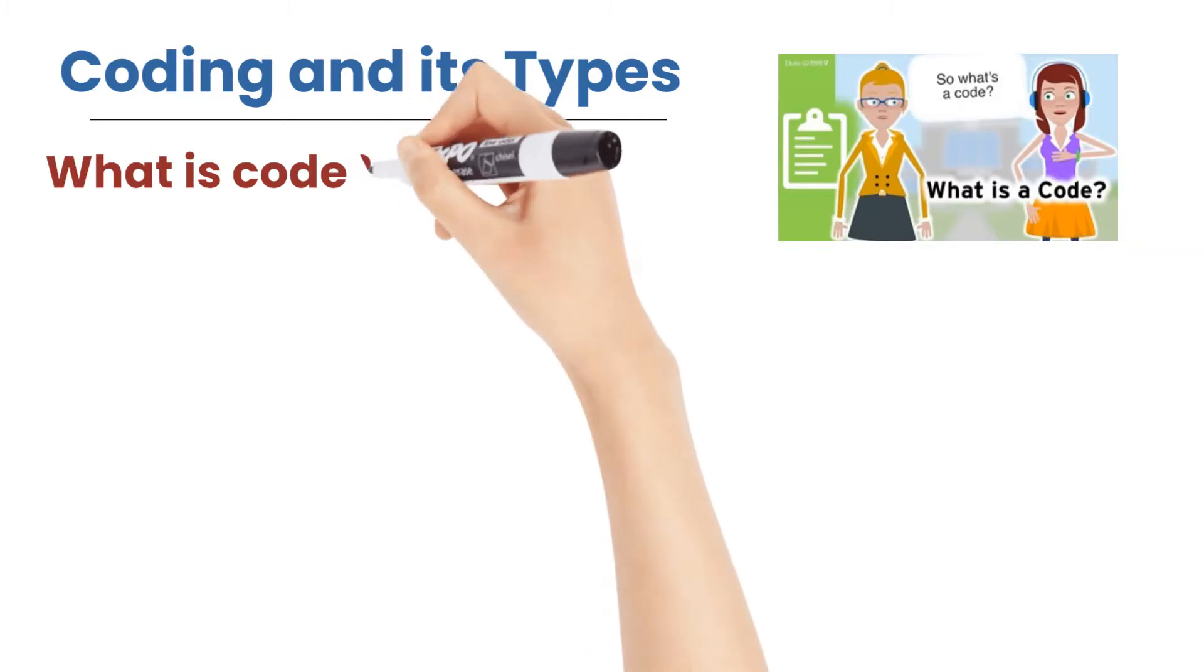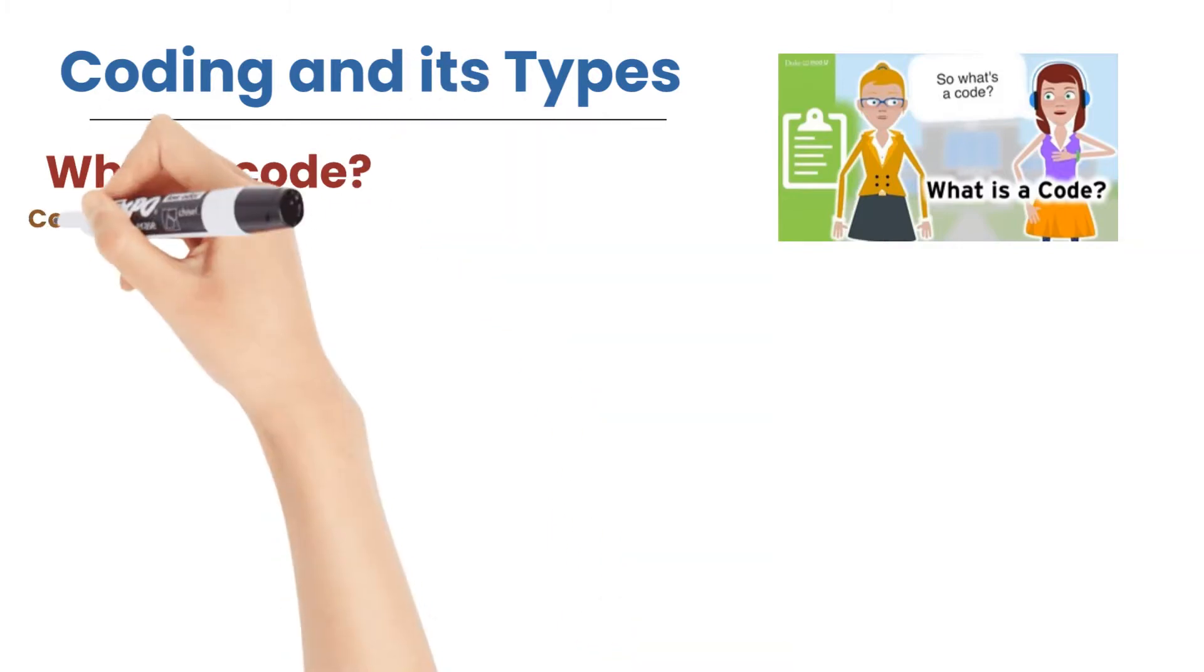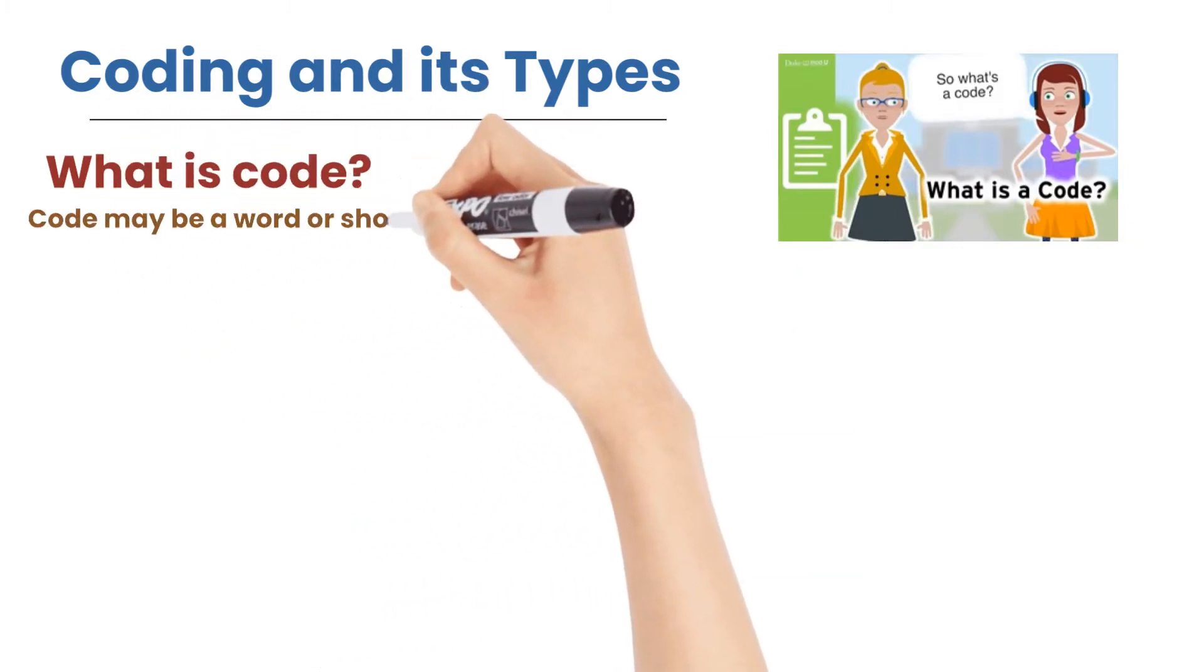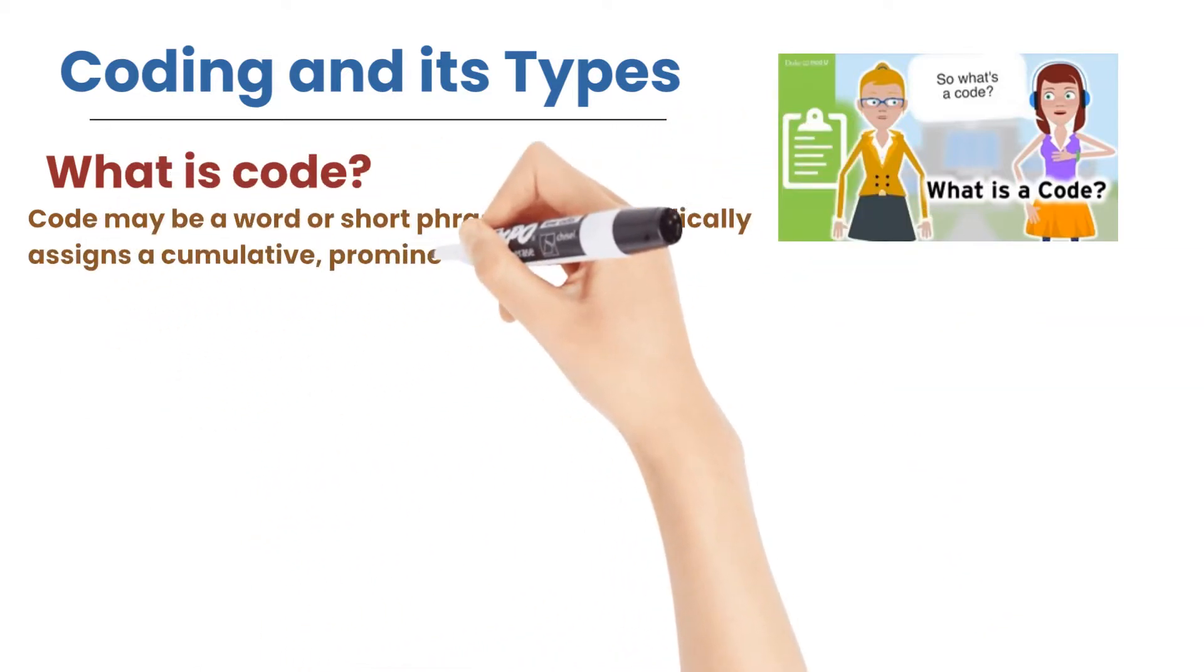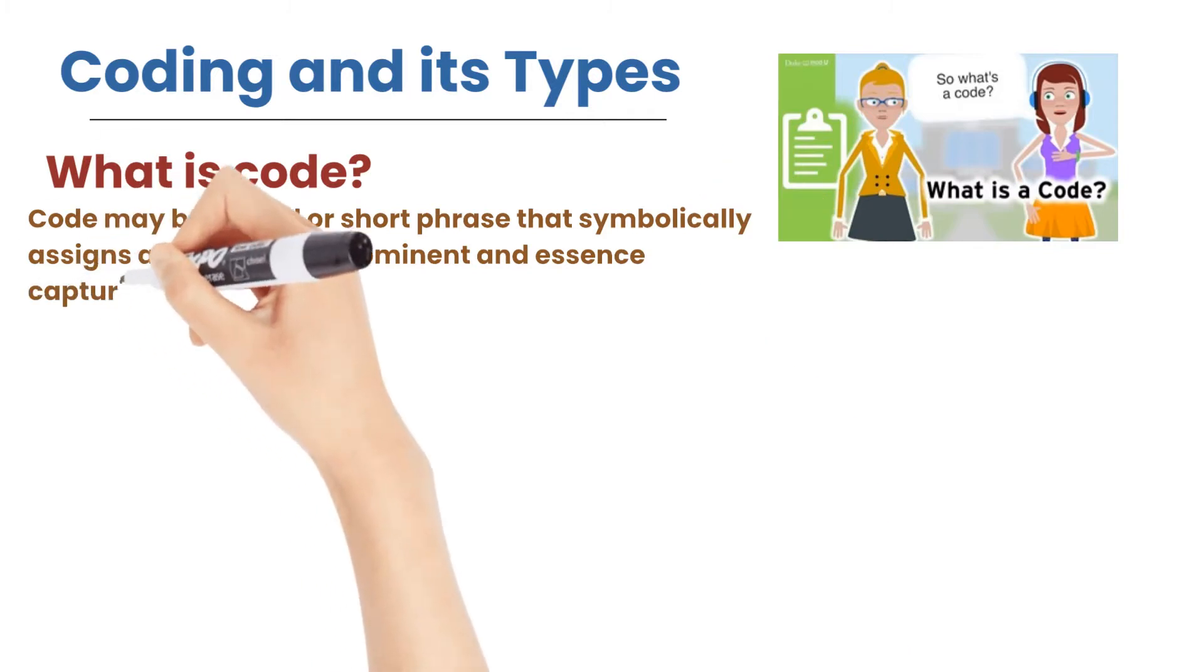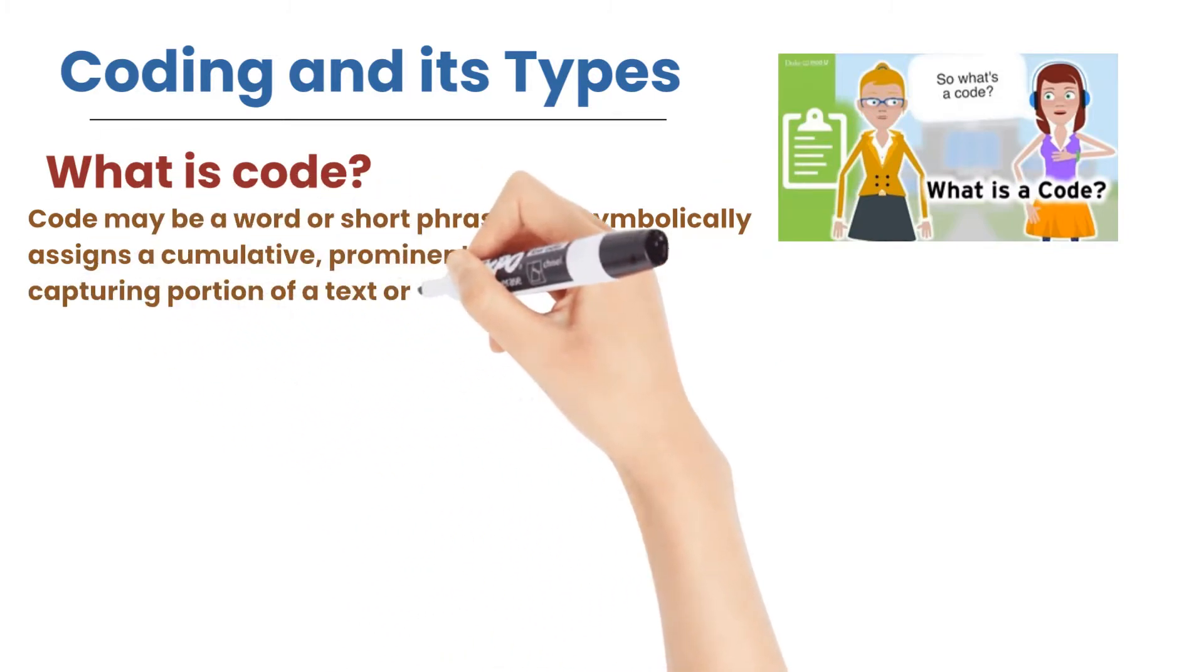So what is code? Code may be a word or short phrase that symbolically assigns a cumulative, prominent and essence capturing portion of a text or visual data.